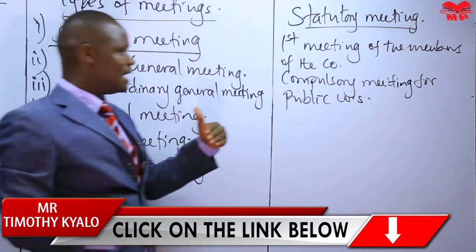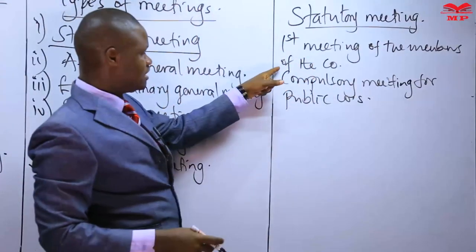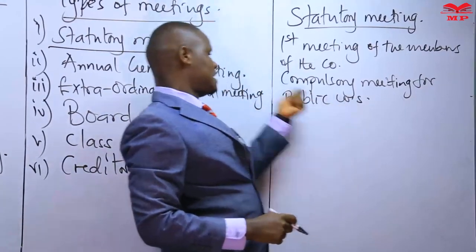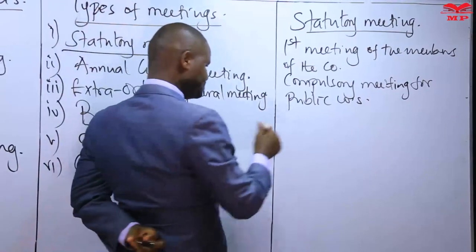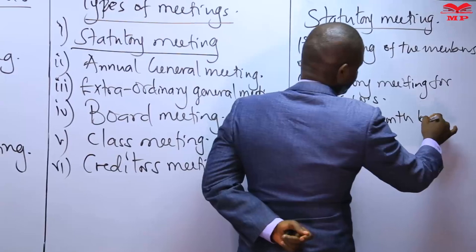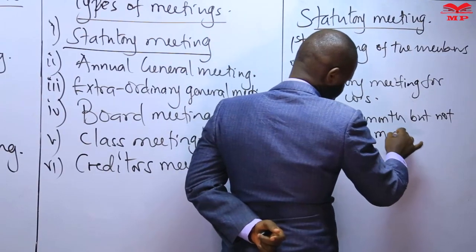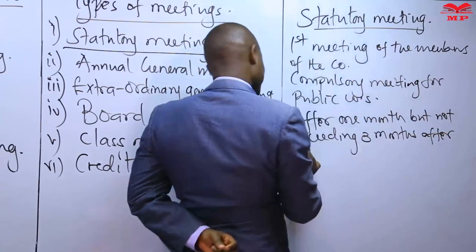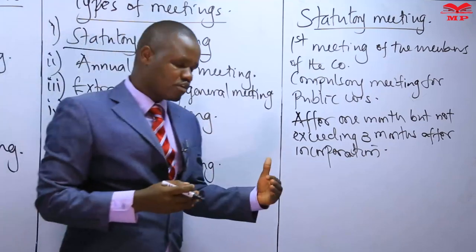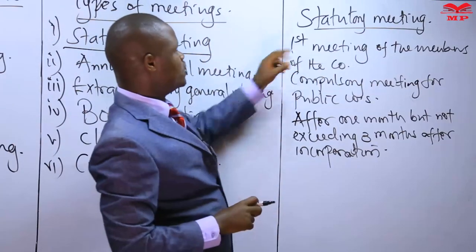The statutory meeting is usually held immediately after incorporation. After the company has been formed, this is the first occasion where the members will meet. For all public companies — all PLCs — they must have this statutory meeting. It is to be held after one month but not exceeding three months after incorporation. The directors must convene this first meeting of the members within that period.